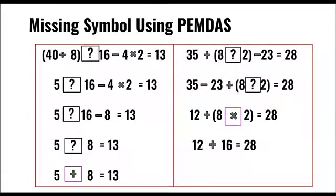35 plus 8, question mark, 2 inside parentheses minus 23 equals 28. First we do what's inside the parentheses,